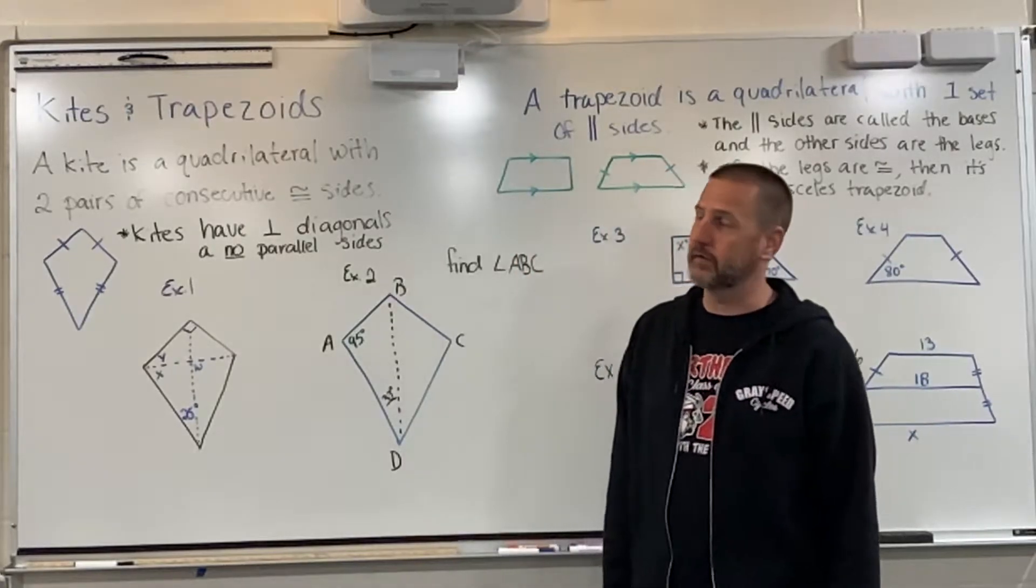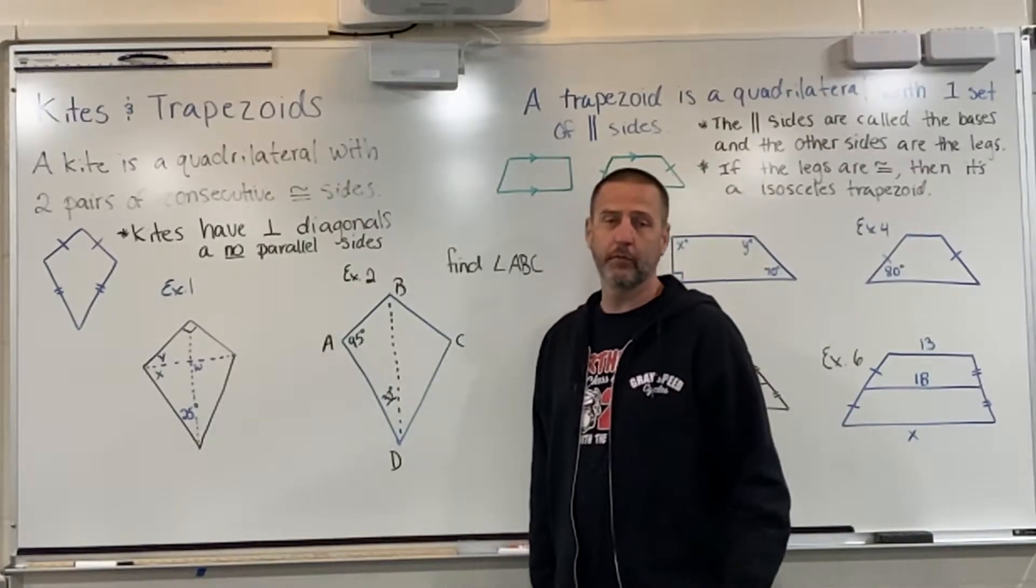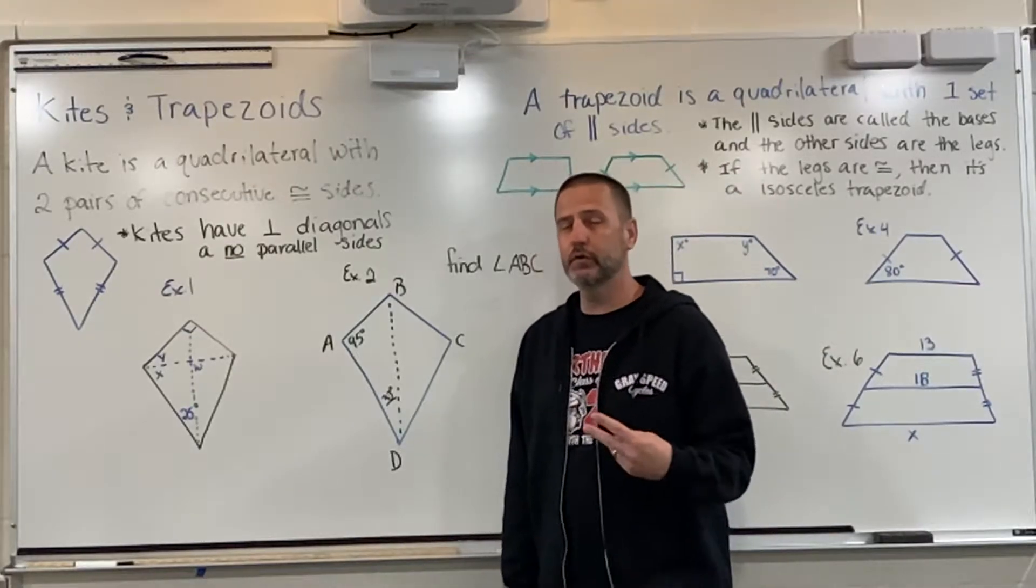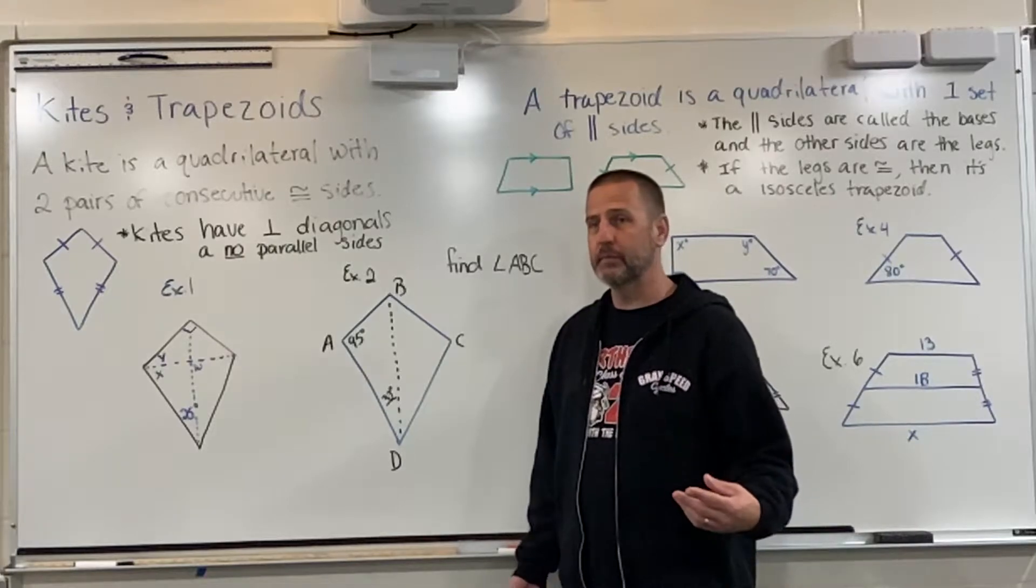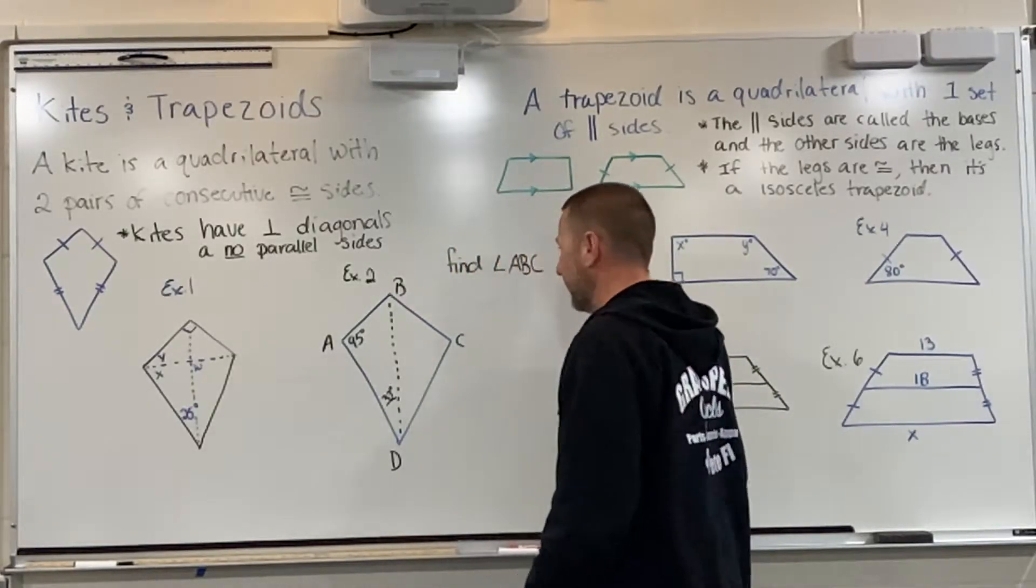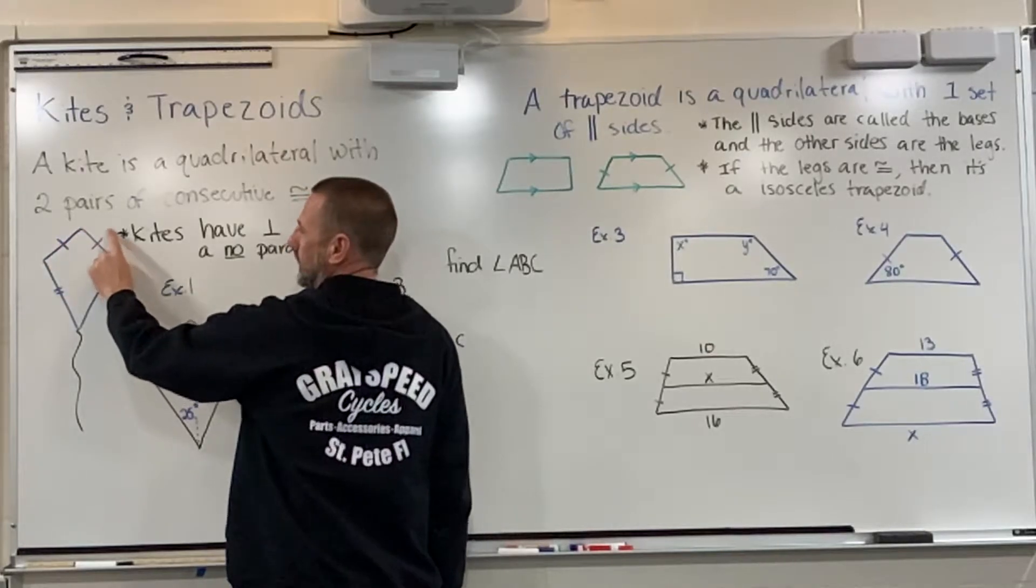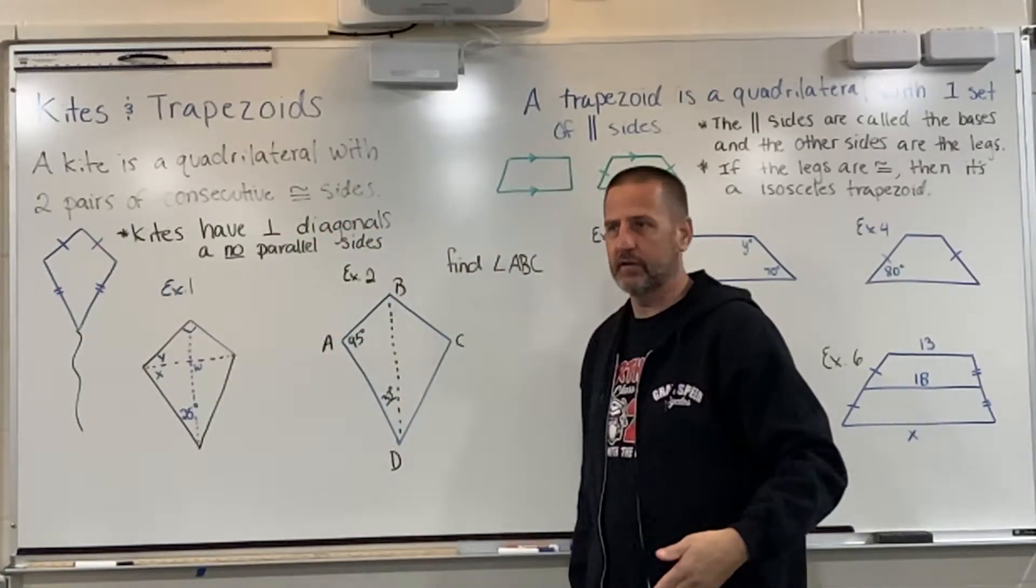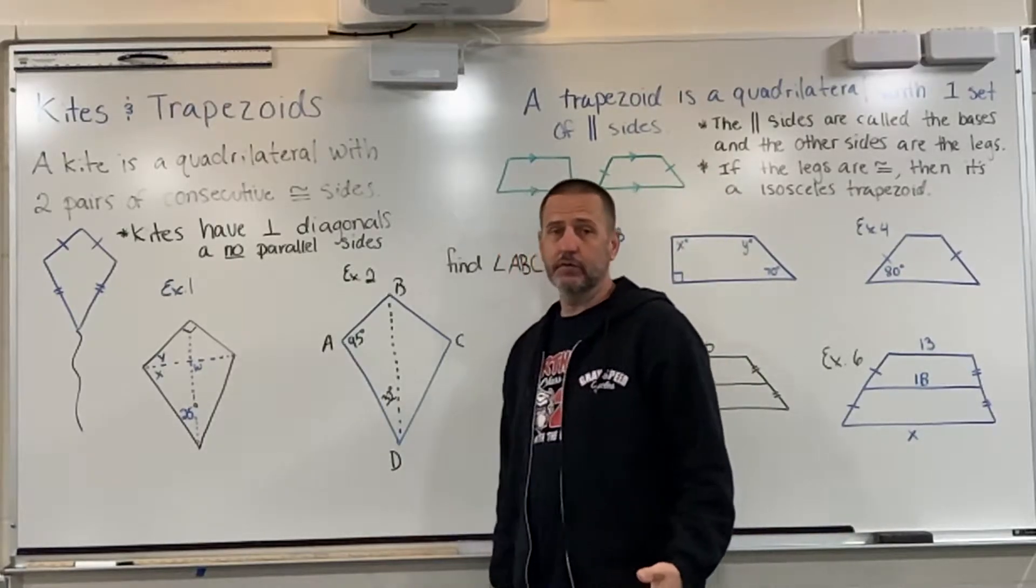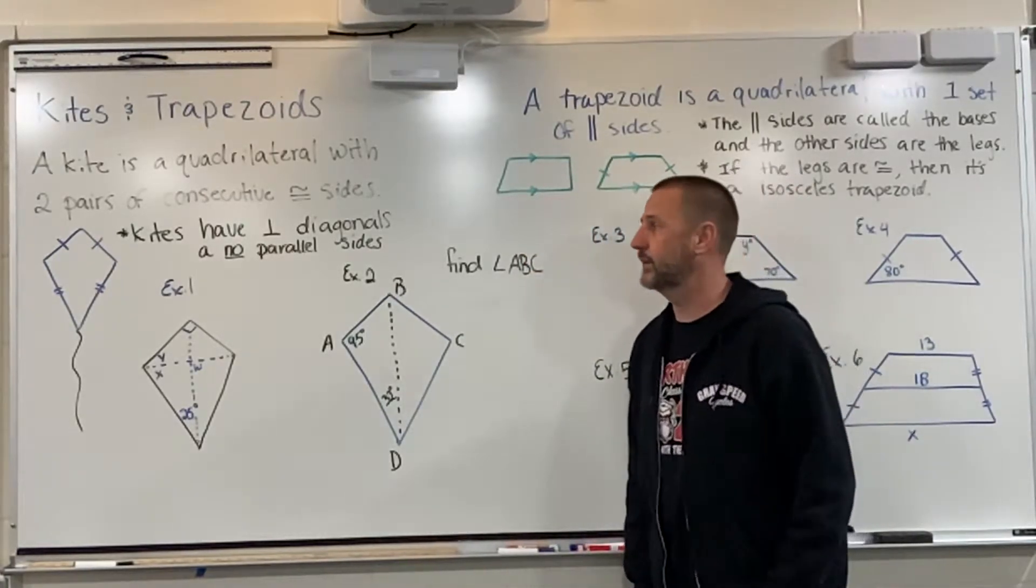The two that we're going to focus on today are called kites and trapezoids. A kite is actually a geometric term, an actual mathematical name for a quadrilateral four-sided figure. We define a kite as a quadrilateral with two pairs of consecutive congruent sides, which means two sides one right after the other that are congruent. That's actually the name of the shape, it's not just a sort of nickname or slang, it's actually the name.